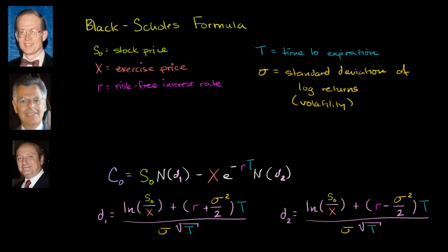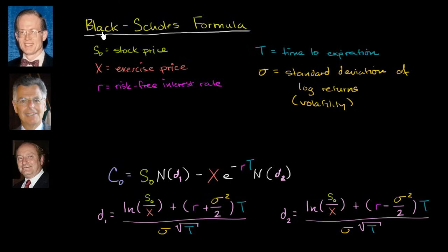We're now going to talk about probably the most famous formula in all of finance, and that's the Black-Scholes formula, sometimes called the Black-Scholes-Merton formula. It's named after these gentlemen. This right over here is Fisher Black, this is Myron Scholes, and they really laid the foundation for what led to the Black-Scholes model and formula. That's why it has their name.